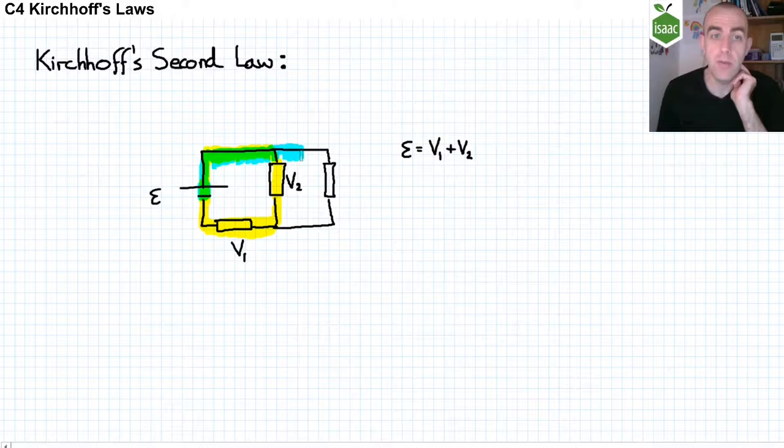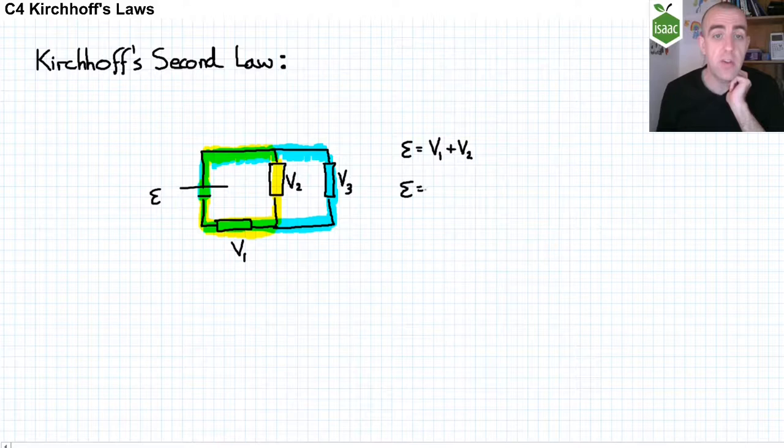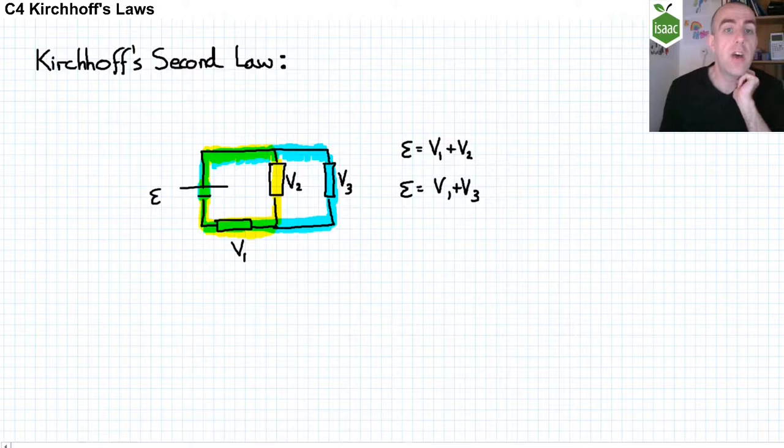If we label the potential difference across this second resistor V3, then we could say on the second loop, epsilon equals V1 plus V3. And I will just highlight these so you can easily see what loops these equations refer to.